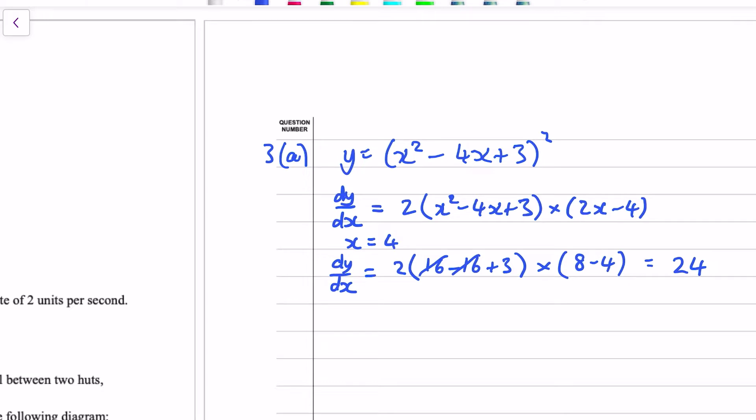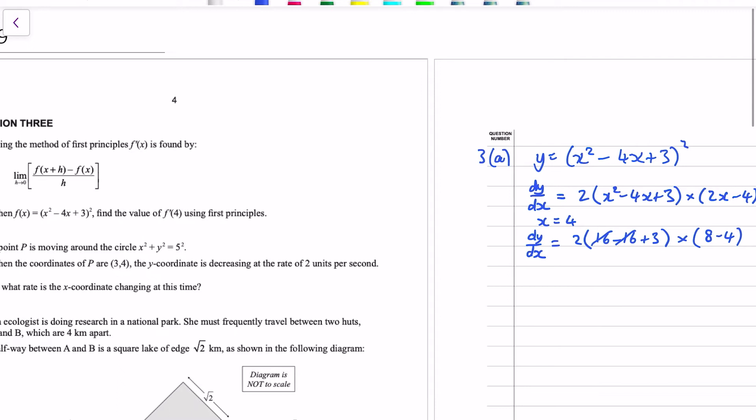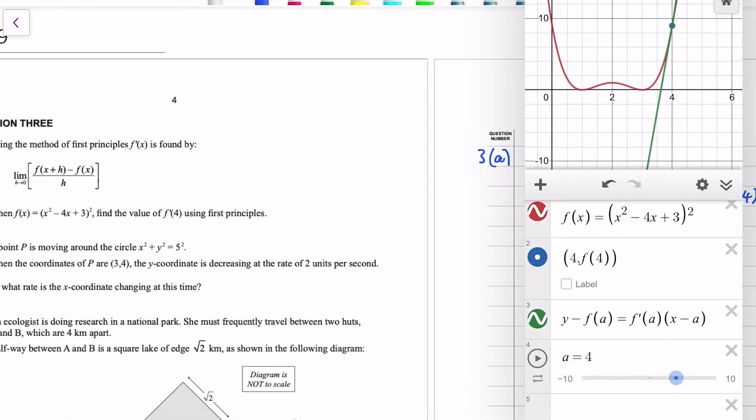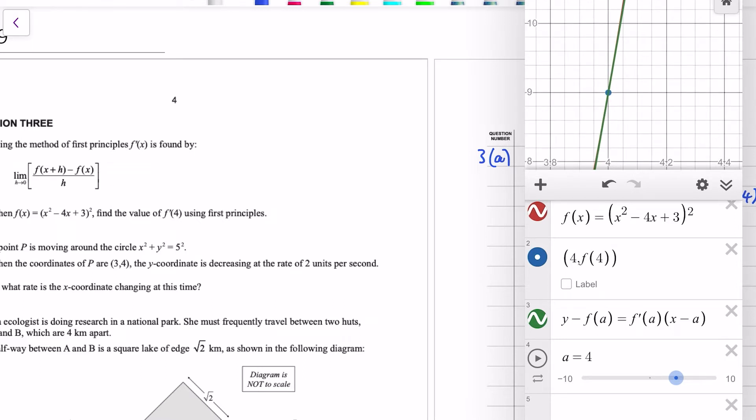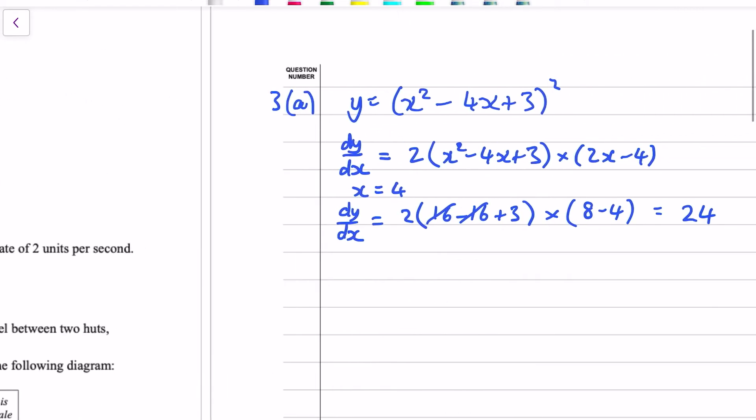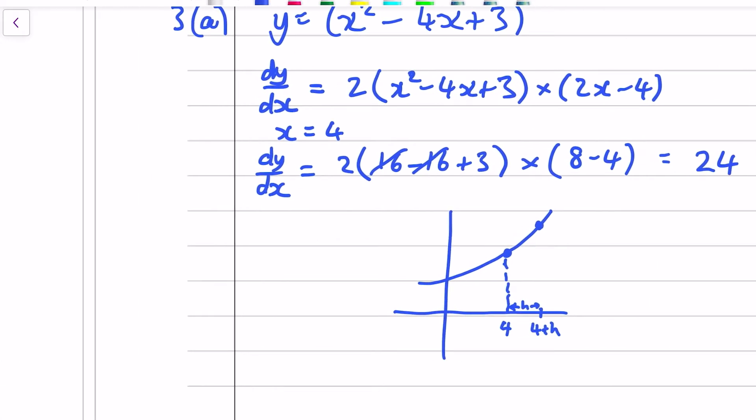So that's the sort of the value that we're looking for. But that isn't first principles, and the question does tell us to use that. So this first principles idea is if we go back to that graph, and we zoom in on that tangent, which is drawn at x equals 4. If I took a slight step to the right, so an h value that's very small, and then I take a vertical jump to get back onto the function, I would have two points on the graph of which I could find the slope between them.